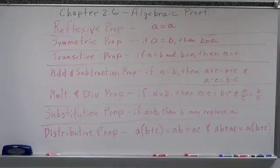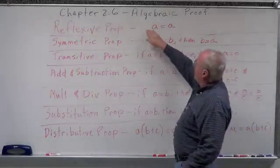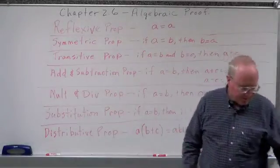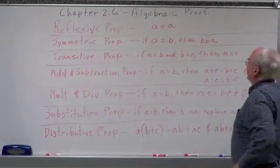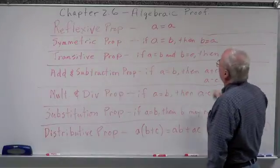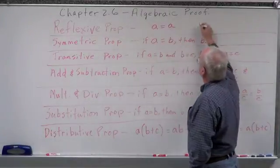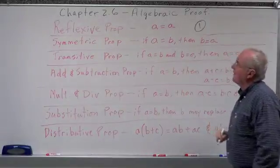The first one is the reflexive property. I call it the mirror property. It is A equals A — I equal myself. Notice there's only one thing here; I call that a one.